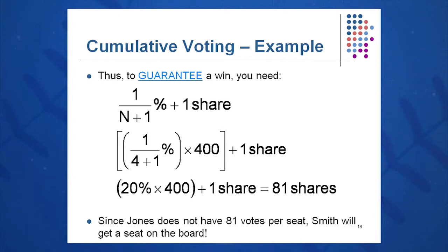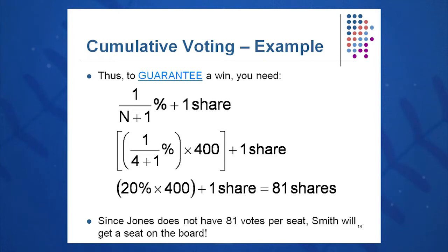Under cumulative voting, you take the number of shares you own times the number of directors to be elected. Smith has 20 shares times 4 votes equals 80 votes total. Jones has 80 shares times 4 votes equals 320 votes — a total pool of 400 votes. To guarantee a win, Smith needs 1-over-(N+1), so 1/5 or 20%, times 400 votes, plus one share — that's 80 plus 1, or 81 votes. So Smith needs 81 votes to guarantee himself a seat on the board, with no ties.